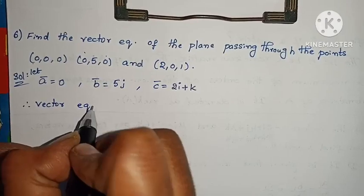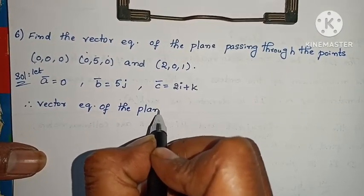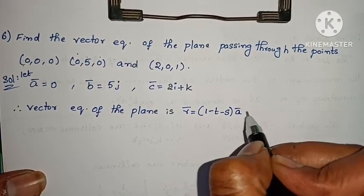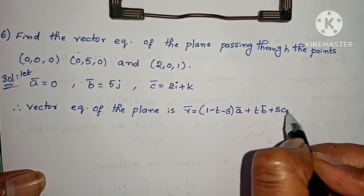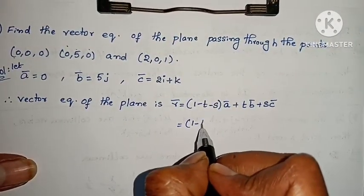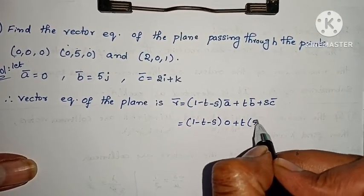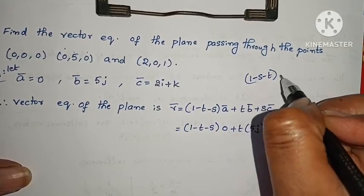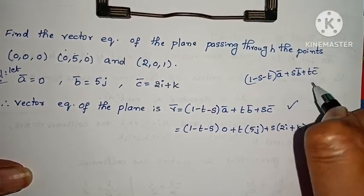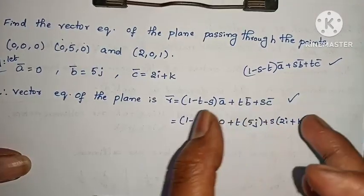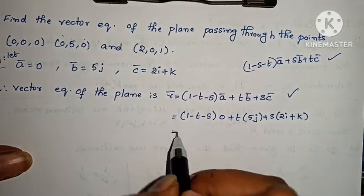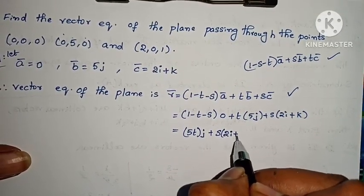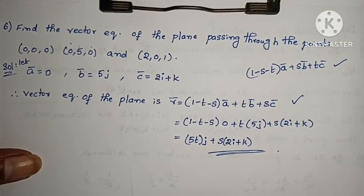The vector equation of the plane is r̄ = (1 - t - s)·ā + t·b̄ + s·c̄. Here ā = 0, b̄ = 5j, c̄ = 2i + k. So r̄ = (1 - t - s)·0 + t·5j + s·(2i + k), which simplifies to r̄ = 5tj + s(2i + k). Problem complete — this gives the vector equation of the plane.